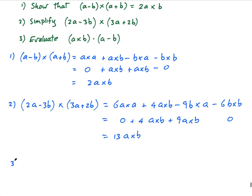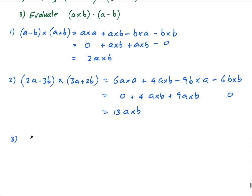Evaluate (a cross b) dot (a-b). Okay, so (a cross b) dot (a-b) is equal to, so remember this is just a vector. So this is a vector dot (a-b).